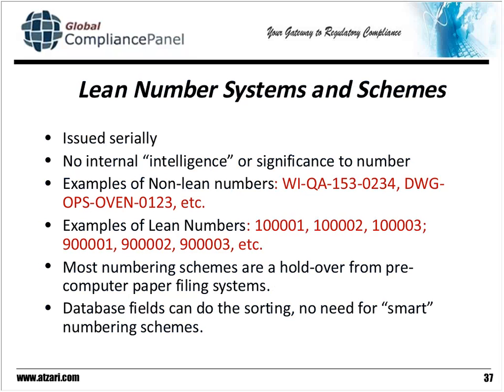Now let's talk about lean number systems and schemes. The use of non-lean numbers — what we used to call smart numbers — includes things like 'WI' for work instruction, 'QA' for quality assurance, '153' may be the room it's kept in, and then sometimes we spell out partial words like 'OBEN.' We create all these things, and this doesn't make things smarter. Each one of those so-called intelligent numbers is a different log that someone has to maintain. In a lean system, we don't want duplicate logs — we want one log.